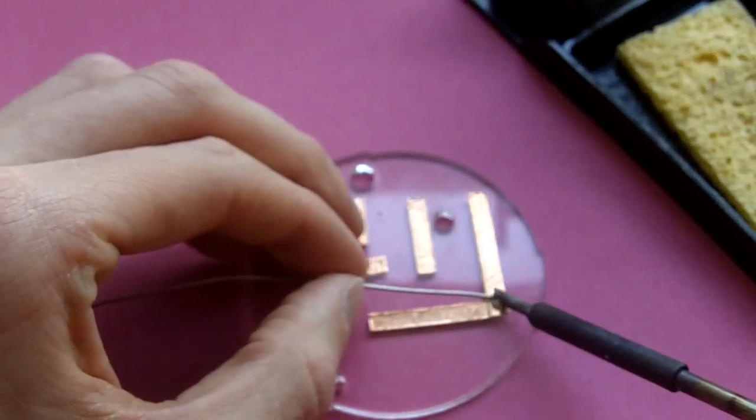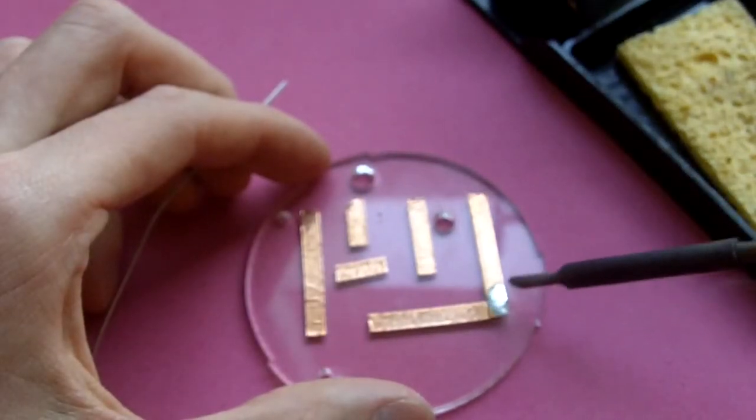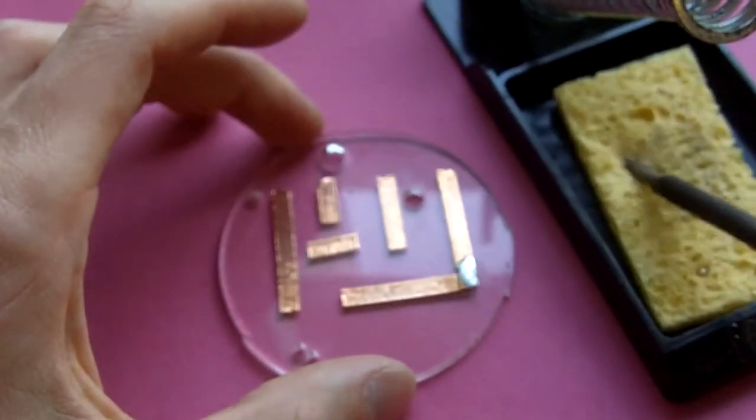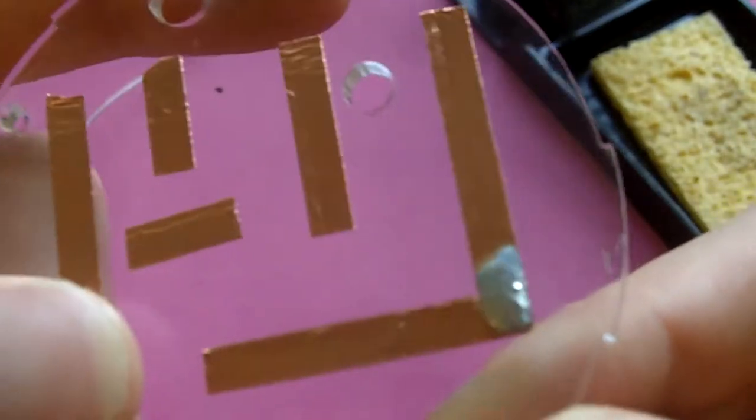You'll need quite a bit. Once it's got to that stage, we can just sort of spread it out a little bit and give the soldering iron a quick wipe.